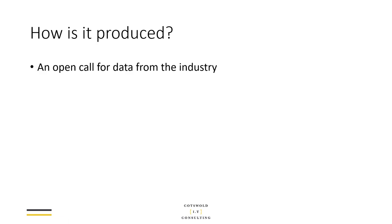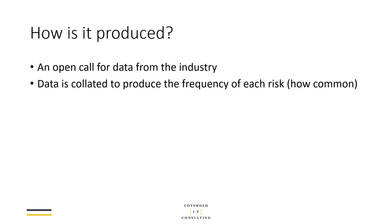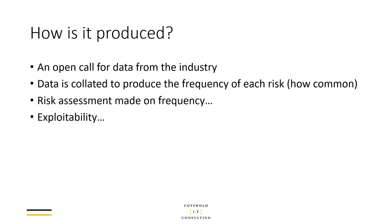So how is the list produced? A call goes out from OWASP saying they're ready to create the next list — please submit your numbers. Companies that do this for a living — that pen test, code review, advise, and see a lot of applications in a given year — will send their numbers to OWASP. Those numbers are anonymous, but they would say, for example, we found 20,000 applications had SQL injection vulnerabilities and 10,000 had cross-site scripting vulnerabilities. That data is basically collated to produce the frequency of each risk — how common does this risk actually happen? Part of the risk assessment is then made on that frequency, and on how easy it is to exploit. If something is very easy to exploit, that makes it more serious than something that takes a lot of work or a lot of things to be lined up.